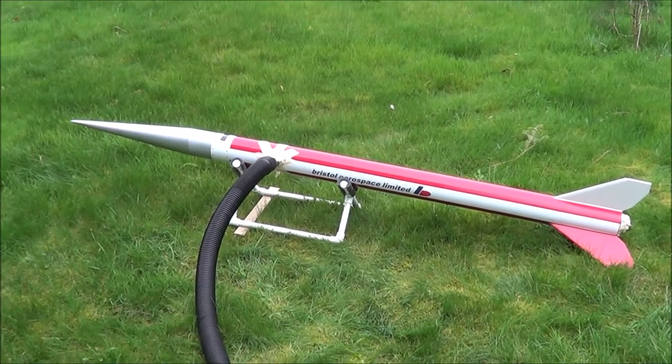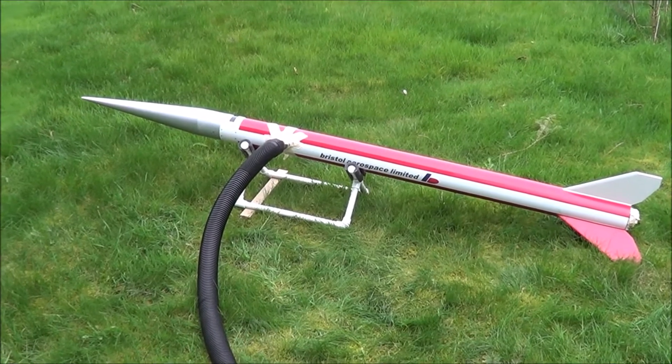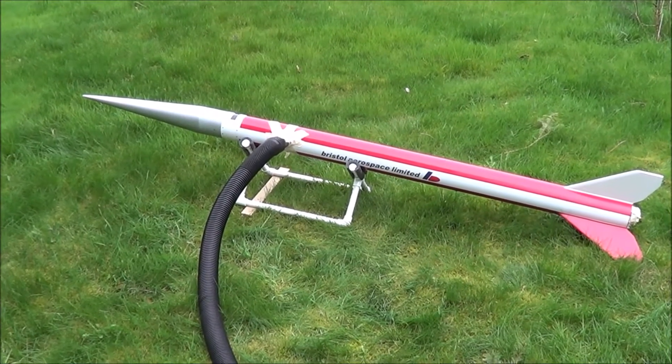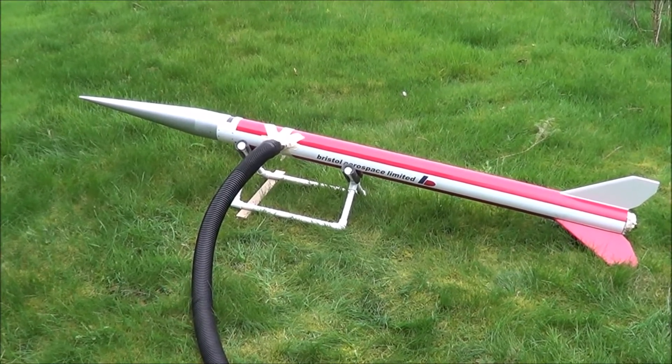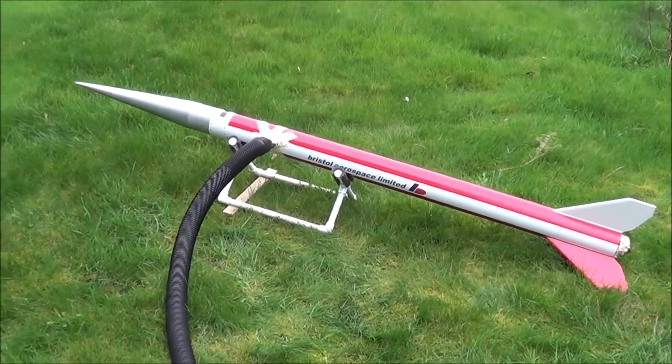All right, here's the Polcat Blackbrant 3. We're going to test the charge on the main parachute this time. We're using the primary altimeter again, the RRC 3. We're using 1.3 grams of black powder and I have two shear pins on the nose cone. So here we go.